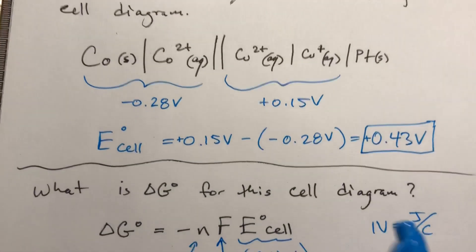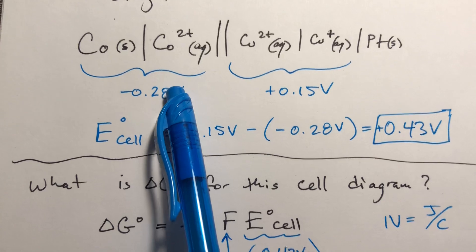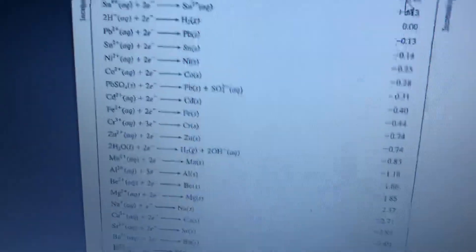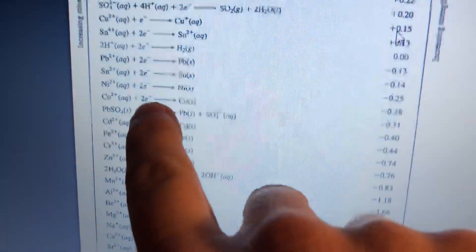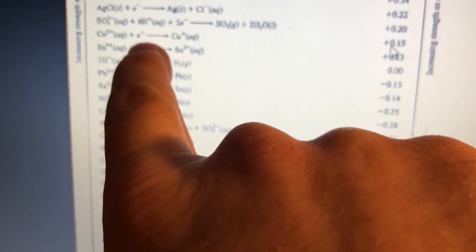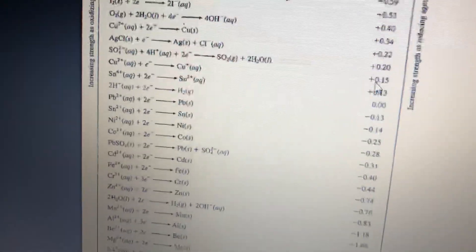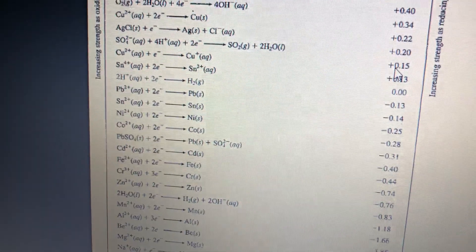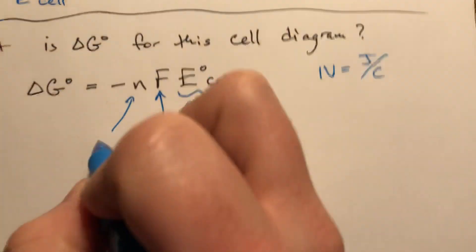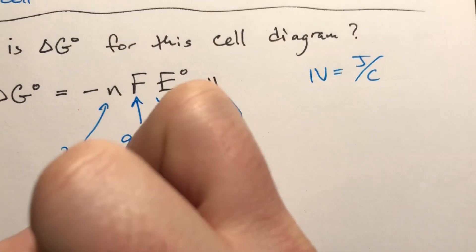So if we looked at these previous reactions, if you looked at the balanced equations on the chart up here, the cobalt reaction had two electrons, and the copper reaction had one. And this is like when we were balancing redox reactions, we need to find the least common multiple between those two. So the least common multiple between 1 and 2 is 2. So n is 2 moles of electrons.